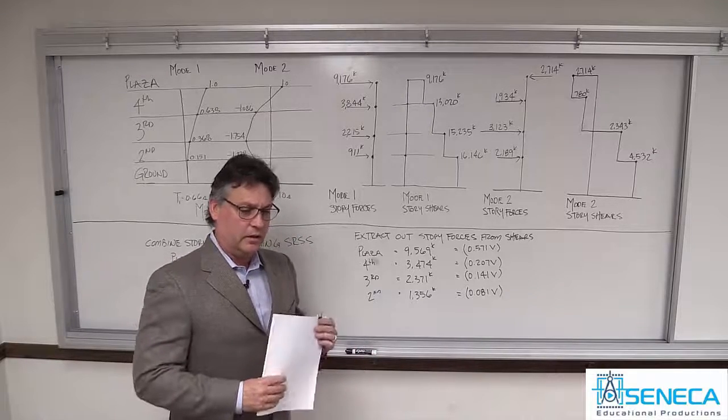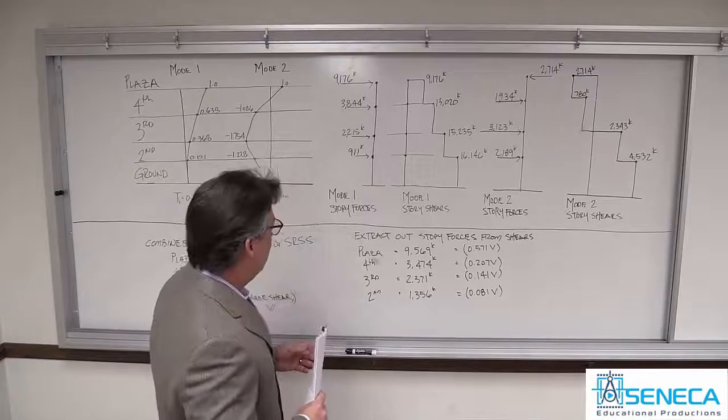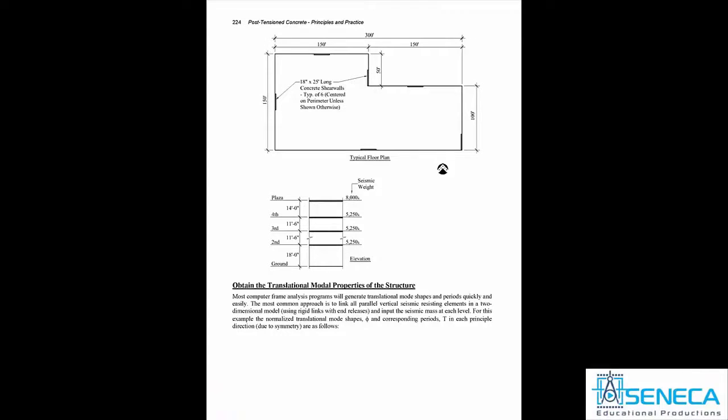I need something to hang the microphone transmitter from. As you can see on your screen, this will be the example that we will look at. I decided not to do a rectangular example. I put a notch in it to make it a little more exciting. I made all the shear walls 18 inches thick and 25 feet long, so the rigidities are the same. This is a four-story building, and I loaded it up at the roof with more load, something like it's a plaza. The other three levels have the same seismic mass.